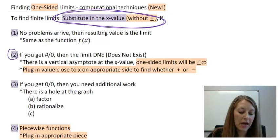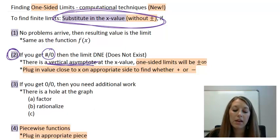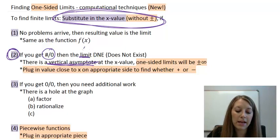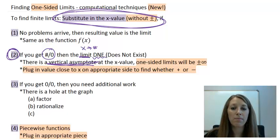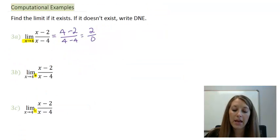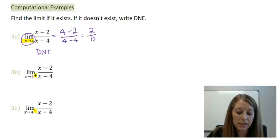Getting a number over 0 puts us in category two — there is a vertical asymptote at that place. If we're looking for the limit in general, meaning as x is approaching the number, the answer is going to be does not exist, because our graphs rarely match on opposite sides of the vertical asymptote. So the answer to part A is: the limit as x approaches 4 does not exist.